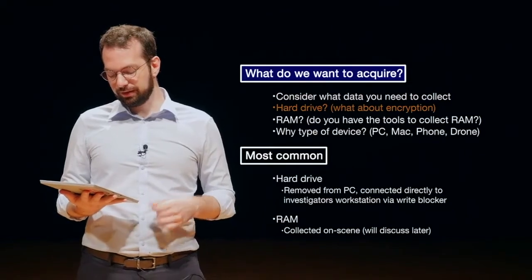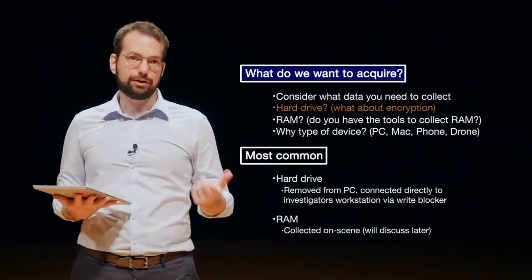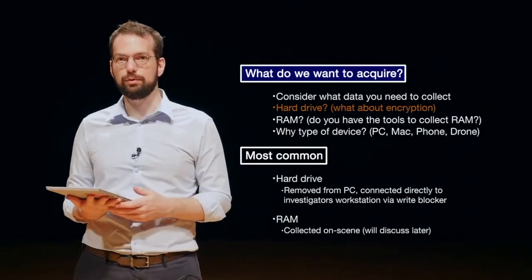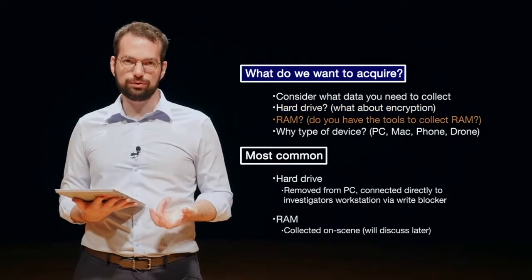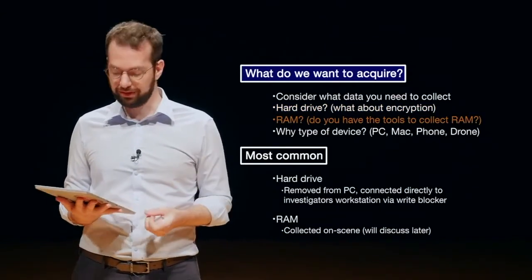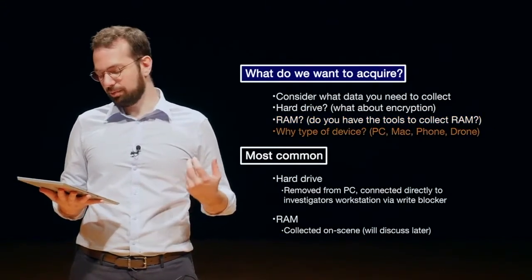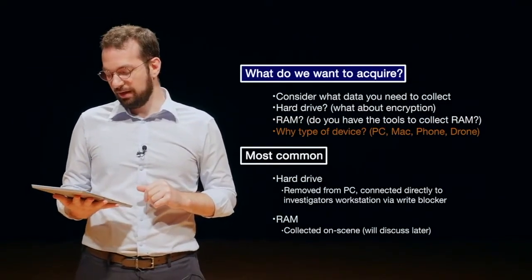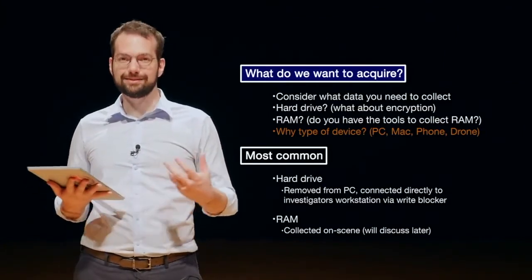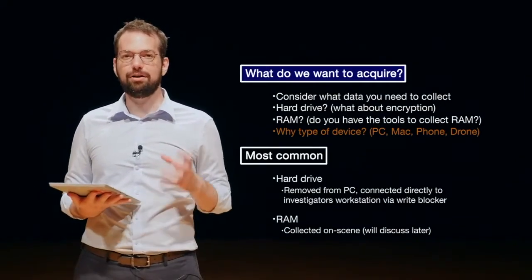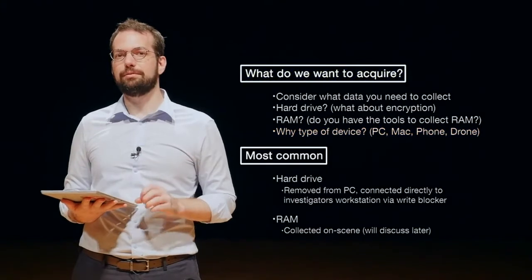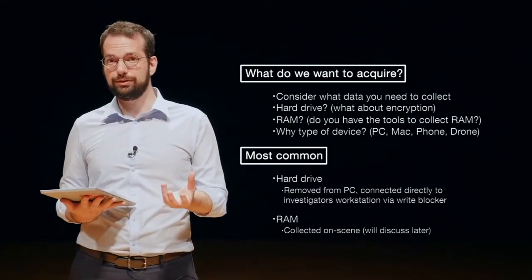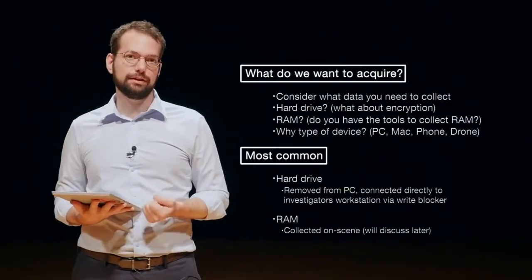Consider what data you need to collect for the investigation. Is it a hard drive? If so, is there any encryption that makes it more difficult to access the data? Consider RAM — do you have the correct tools to acquire RAM on the device you're investigating? Think about the type of device: a PC and a Mac are quite different in how you'd collect data. It might be a mobile device — tablets and others all have different collection methods. Even newer devices like drones have data storage, and we might need to get video off a drone.